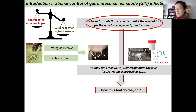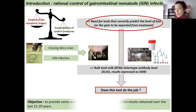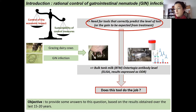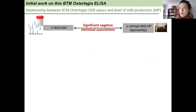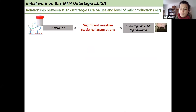So does this tool do the job? The objective of my presentation is to provide some answers to this question based on results obtained over the last 15 to 20 years. Initial work focusing on this bulk tank milk Ostertagia ELISA showed significant negative statistical associations between ODR values and the average level of milk production.